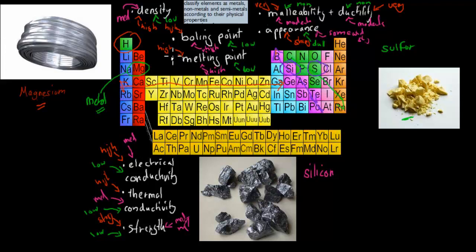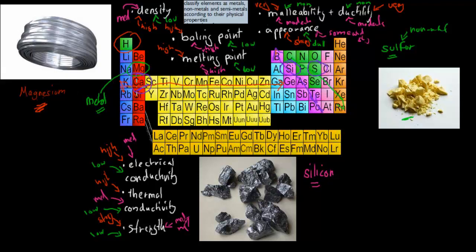These are some of the properties, and as you can see they all have different types of physical properties. Even though we used magnesium as the example for metals, these properties tend to be consistent for all metals. The same applies to semi-metals like silicon, and to non-metals like sulfur. So you need to know what makes a non-metal, what makes a metal, and what makes a semi-metal. Then if someone asks about a specific element on the periodic table, you should be able to classify it and relate it to physical properties.